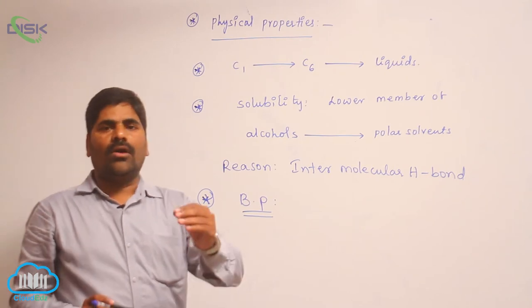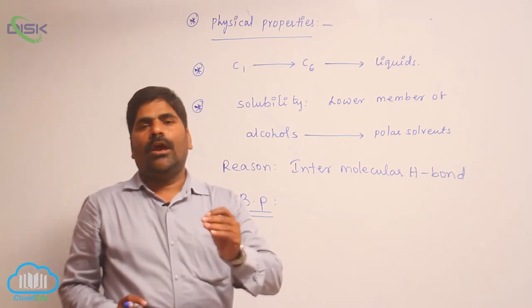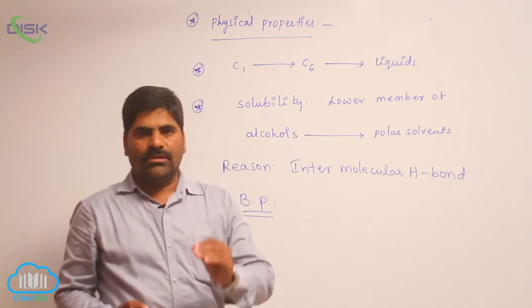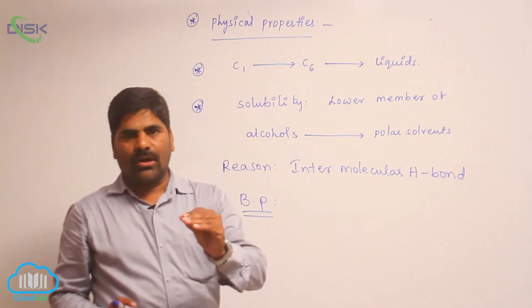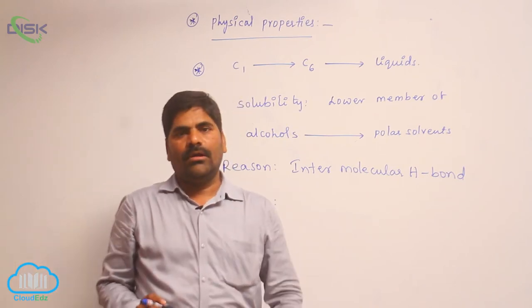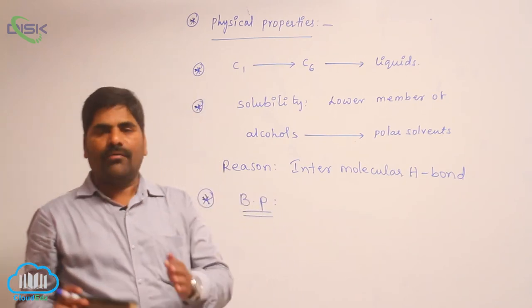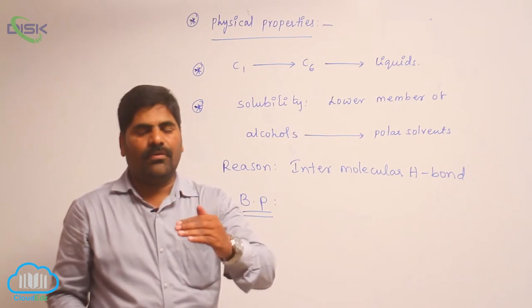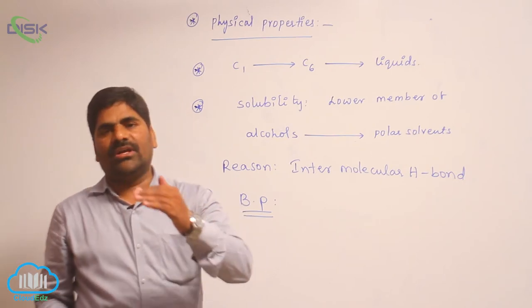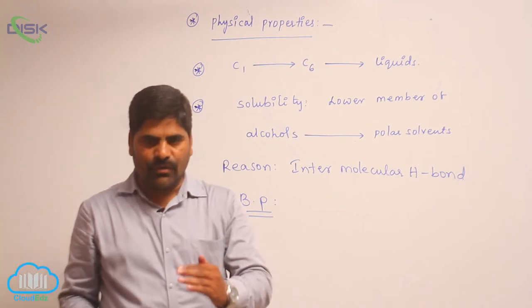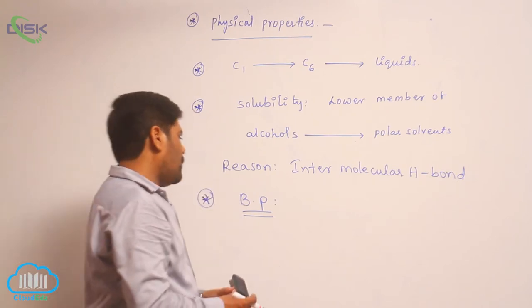But alcohols show high boiling points compared to ethers. The reason is intermolecular hydrogen bonding. Due to intermolecular hydrogen bonds, the association of an alcohol with water molecules increases. When association of water molecules with an alcohol increases, the boiling point gradually increases. For example: